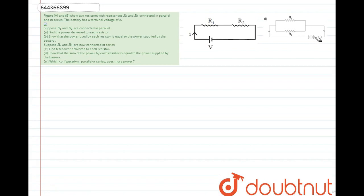Parallel condition. First for parallel condition, what do we have? R equivalent is how much? One by R equivalent equals R1 plus R2 by R1 R2.